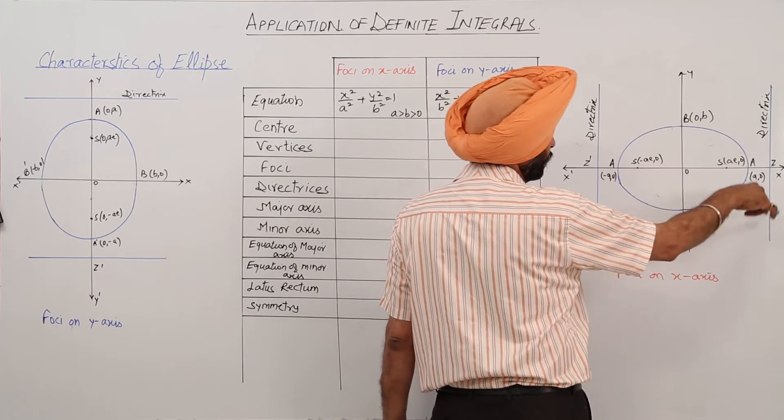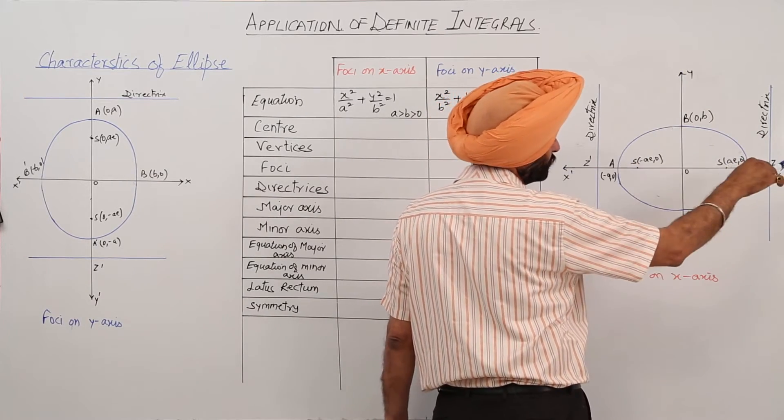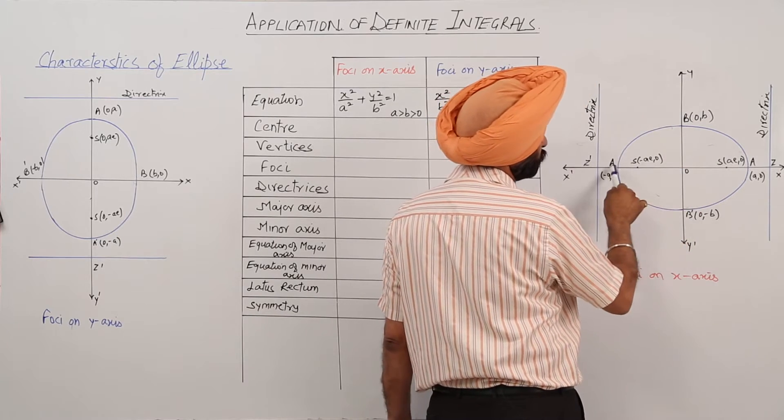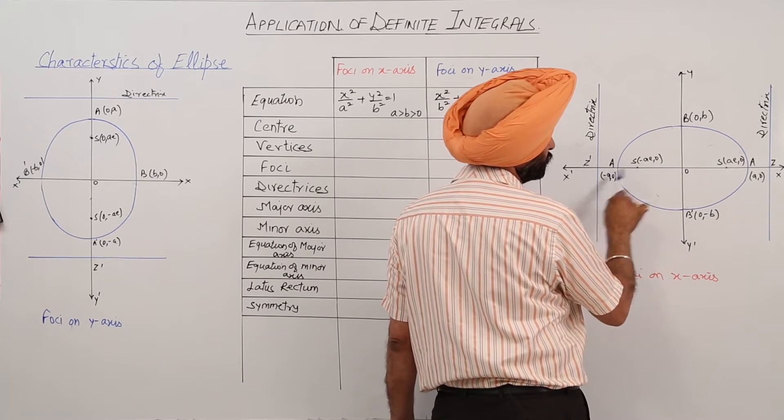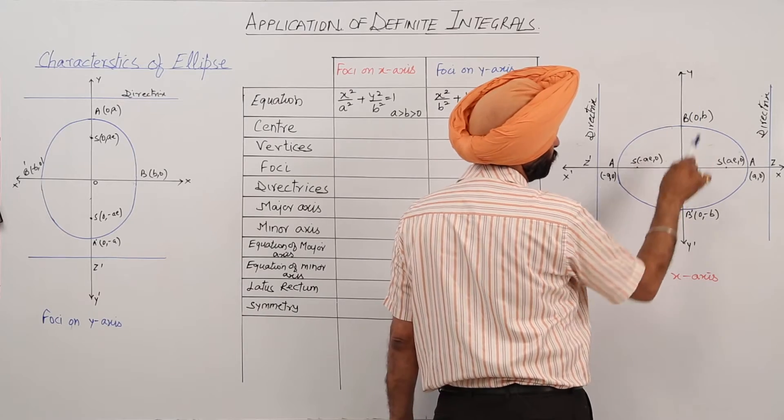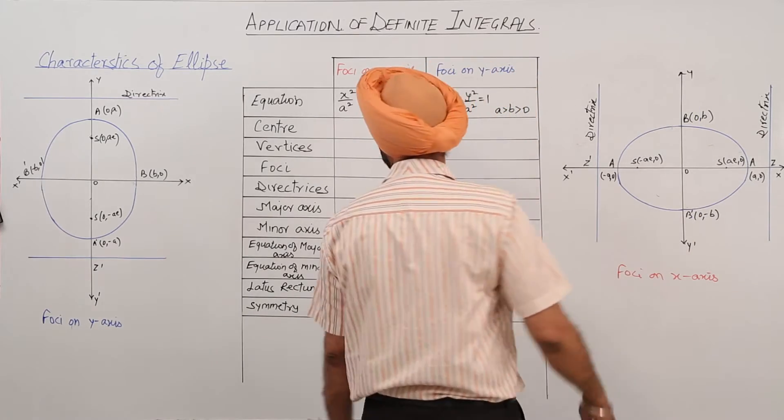Directrix, two directrix, axis: x-axis, y-axis, and the coordinates. Minus a, 0; a, 0; 0, b; and 0, -b. Similarly,